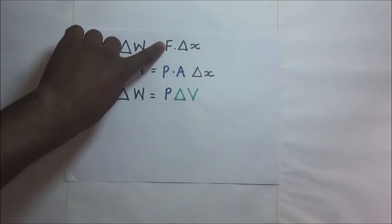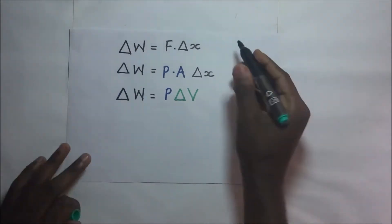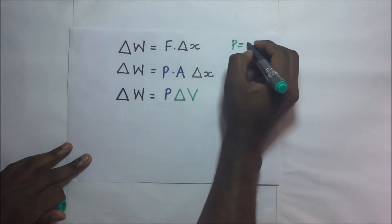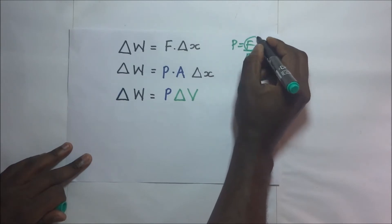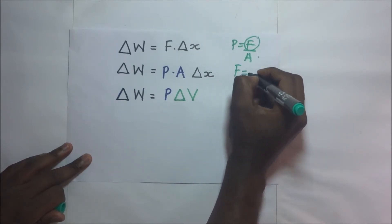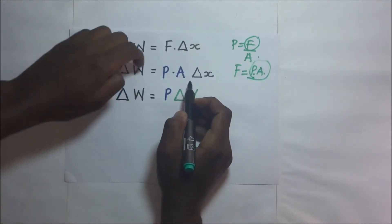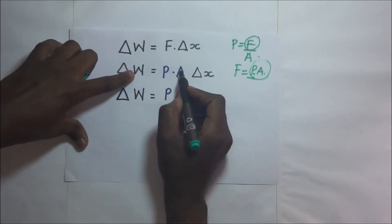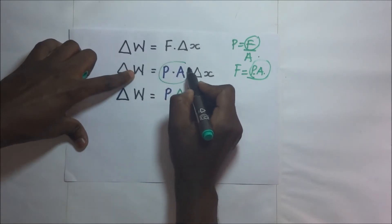We know that force from our formula: pressure is equal to force over area. When we make F the subject of the formula, we know that F is going to be pressure times area. So this is what we have substituted for force, and so that small change in work is given by pressure times area.